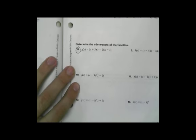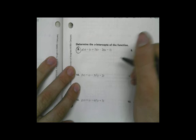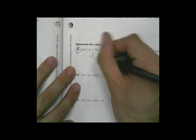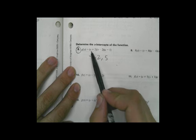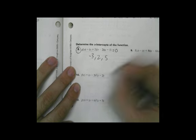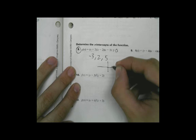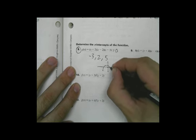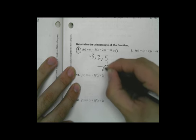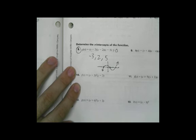And let's look at number 8. Number 8, determine the x-intercepts of the function. That's easy. The x-intercepts are going to be negative 3, positive 2, and positive 5. Simply, we know that the x-intercepts are when this equals 0, when the function y is going to hit negative 3, 2, and 5. Simple.